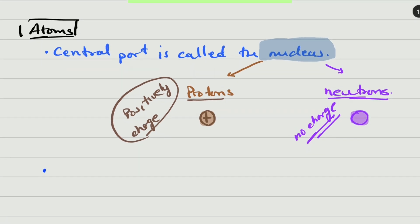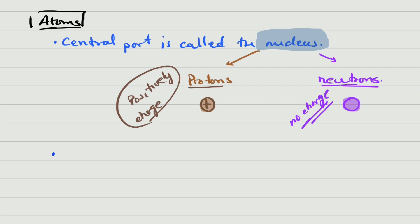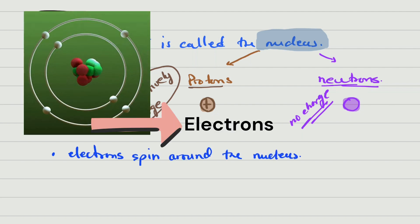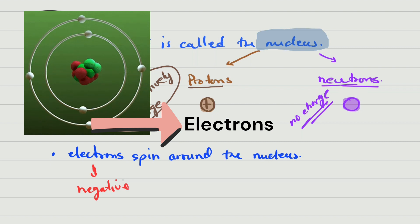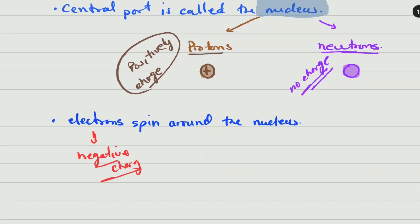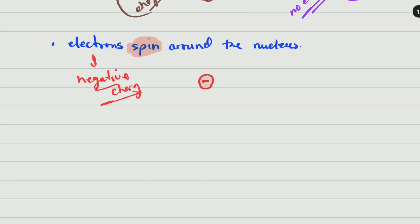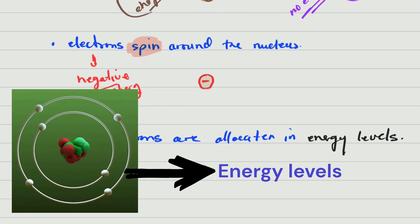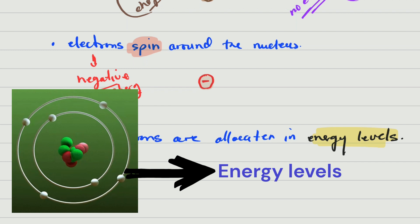Around the nucleus you will find electrons with a negative charge moving. Electrons will be spinning around the nucleus and they are negatively charged particles. If we represent them, the electrons could be represented with a negative sign inside, and electrons are much smaller than protons. Those electrons are going to be in some place called energy levels — like the orbits of the planets around the nucleus.